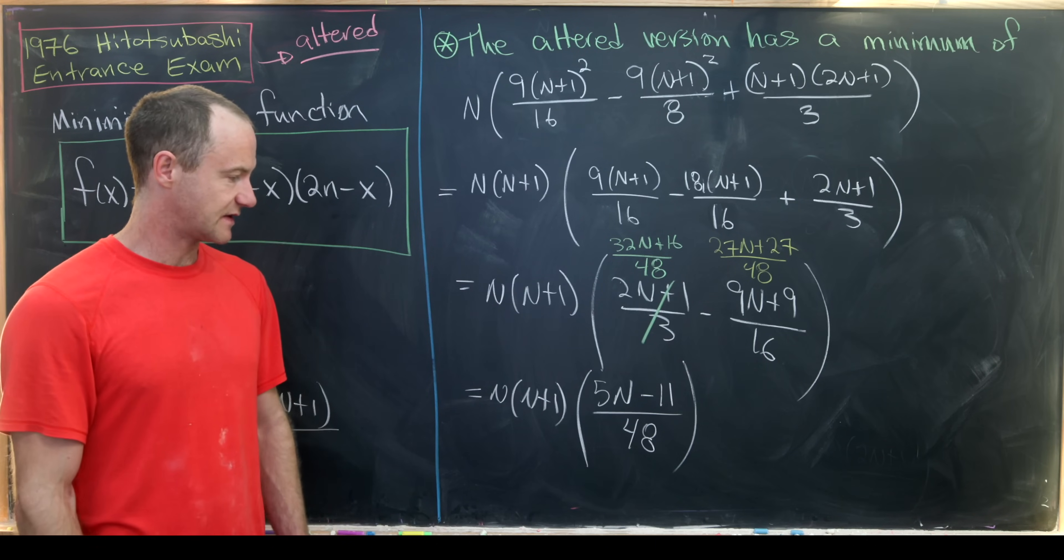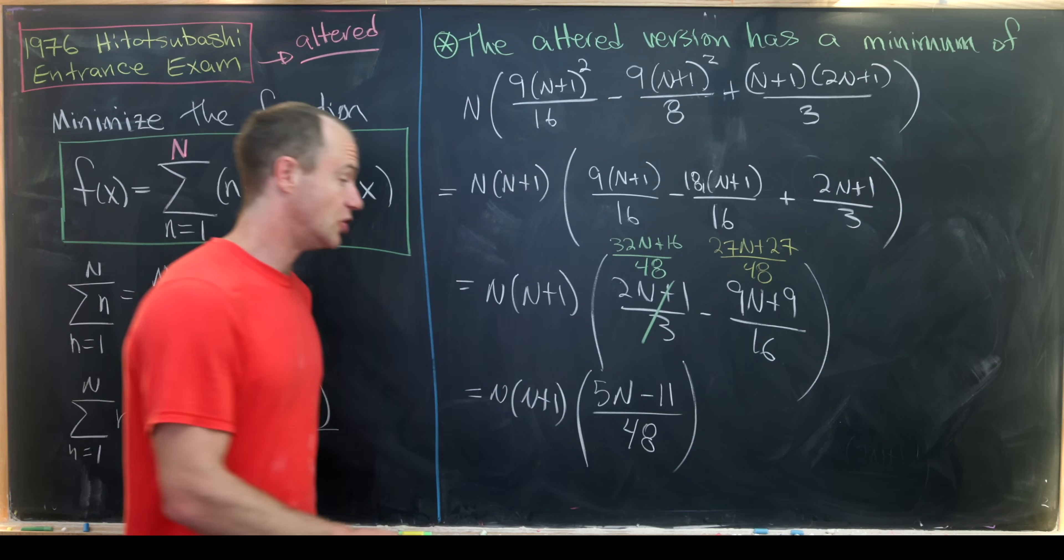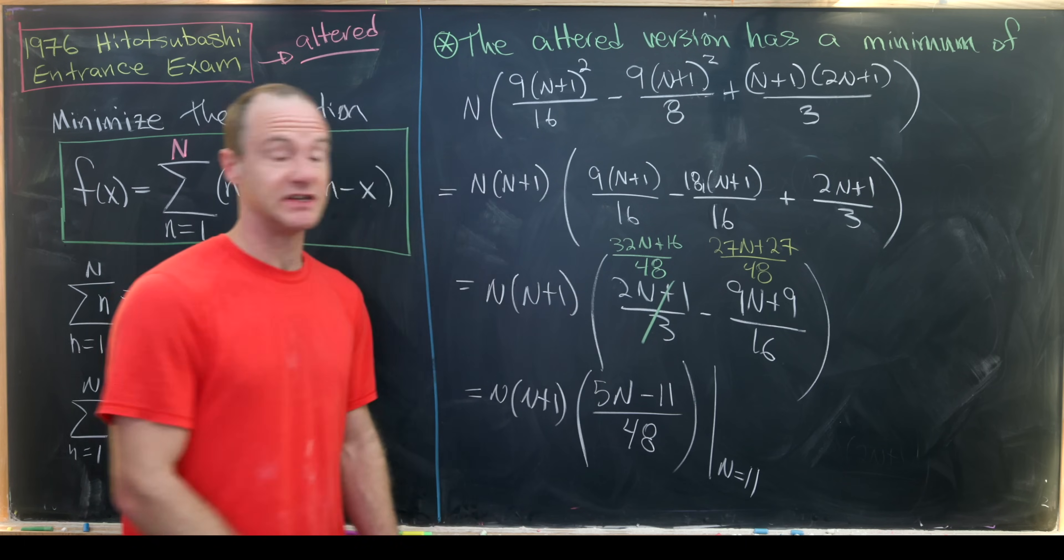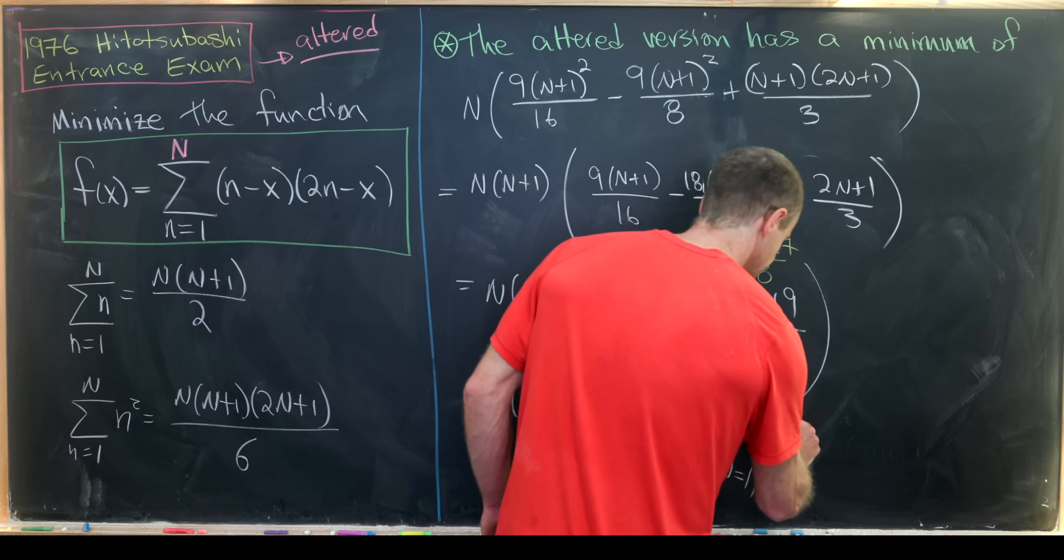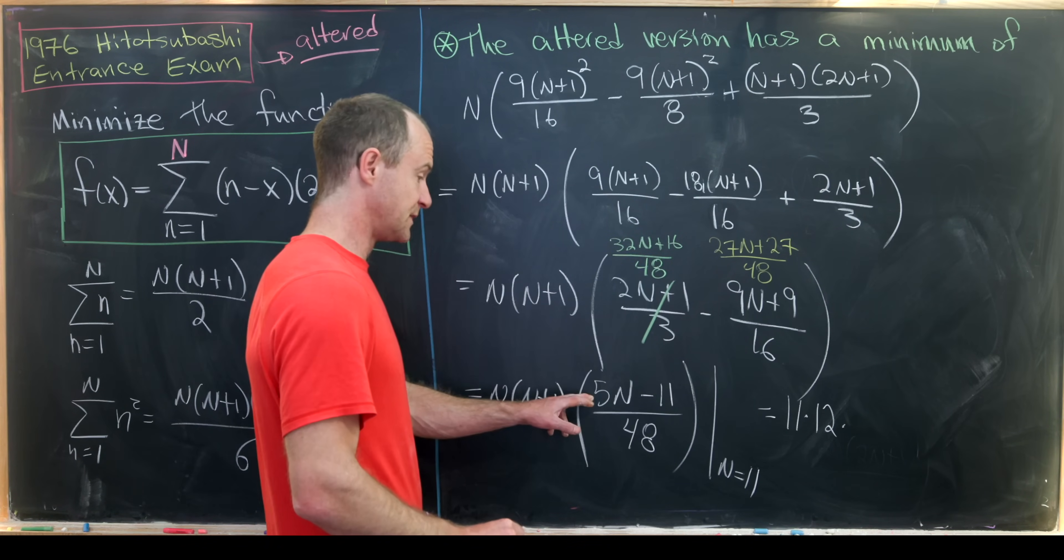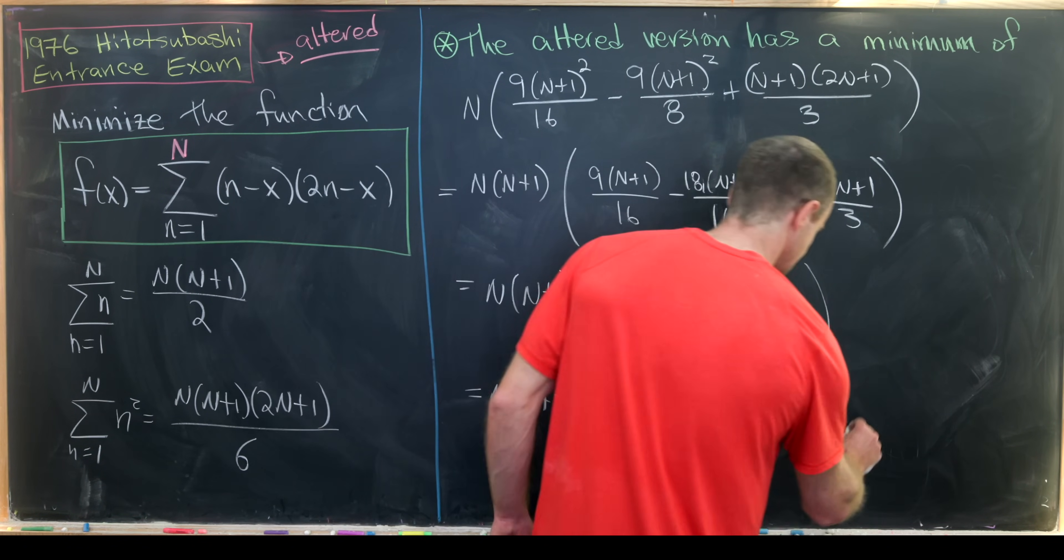So that's not really that pretty but notice that if we set N equal to 11 we do recover what we had before. So this gives us 11 times 12 times 55 minus 11, so 44 over 48.